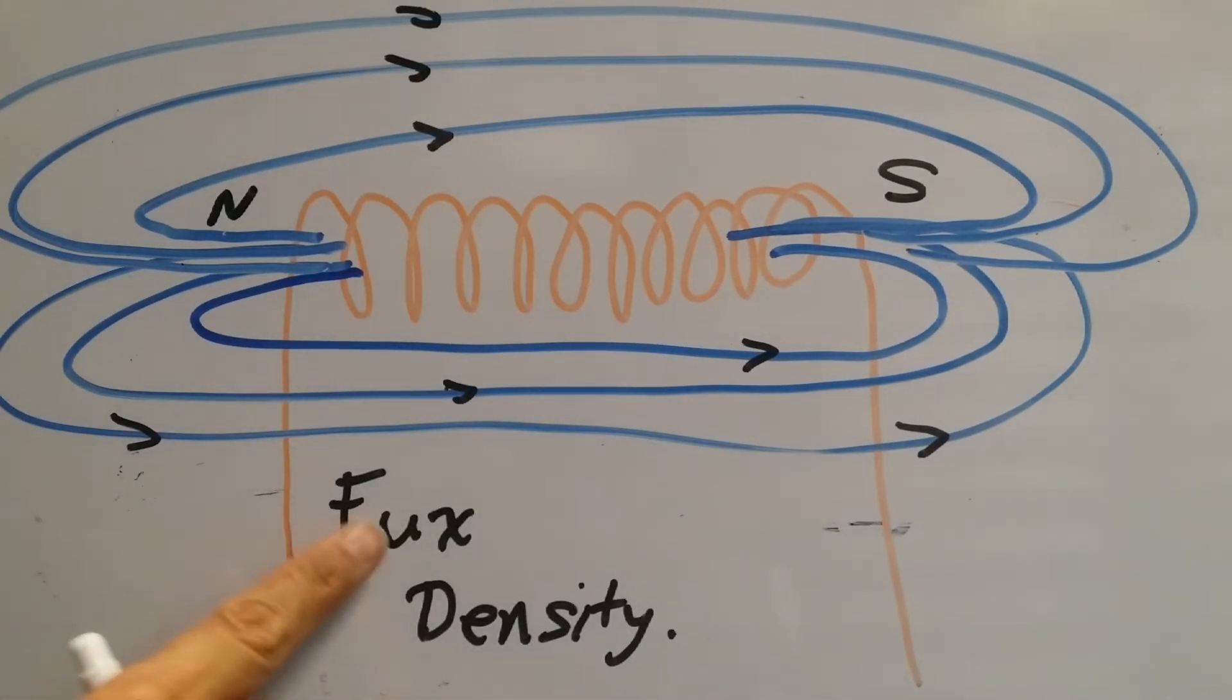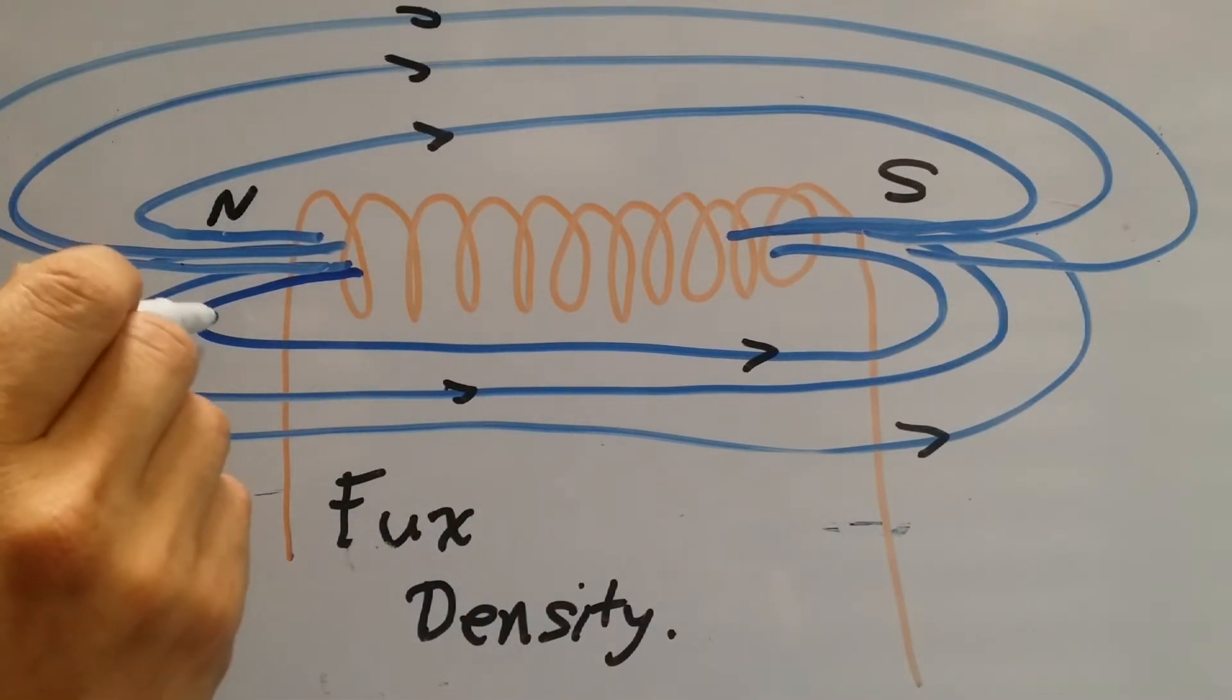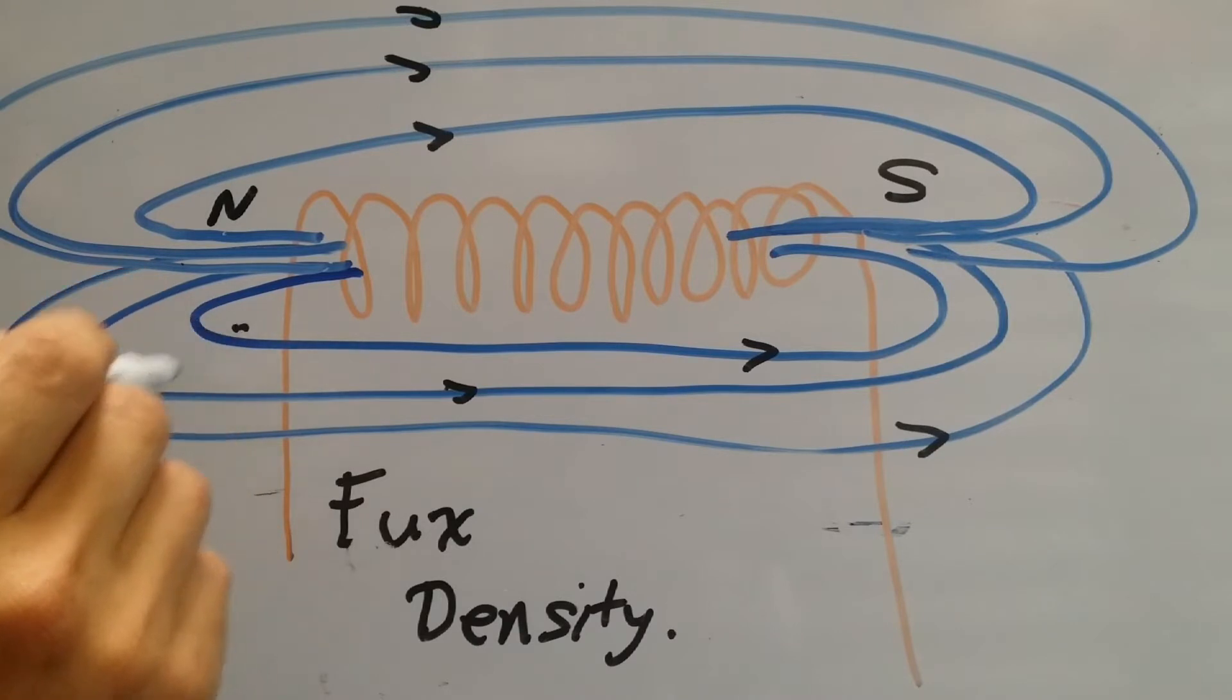There is a term called flux density. And it is the amount of actual lines of flux, or individual lines of flux, that leave the north to go into the south. The greater the number of flux, the stronger the magnet will be.